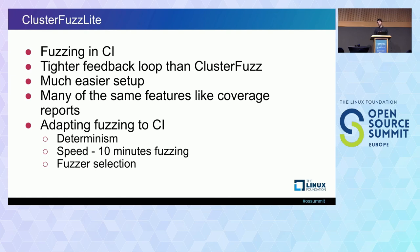To get this working, we had to adapt fuzzing a bit to CI to make it more deterministic. We picked 10 minutes as an arbitrary amount of time to fuzz for. We think this has the potential to find around 30 to 50% of vulnerabilities that fuzzing for days would find. If you're spending about 1% of the time to find 50% of the bugs, that's a pretty good tradeoff if you can't afford full-scale fuzzing.